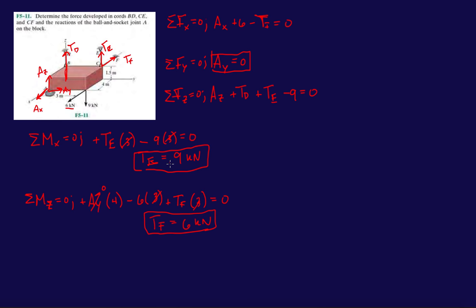Nice. So we have TF, TE. Now that I know TF, let's find AX. That will be 0: 6 minus 6, 0. Nice. Last. Last thing.